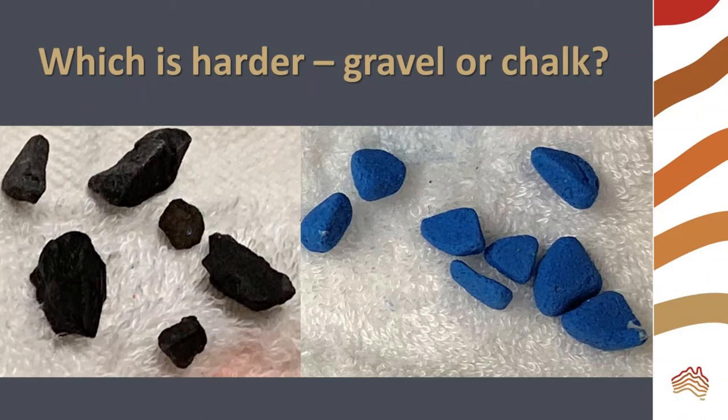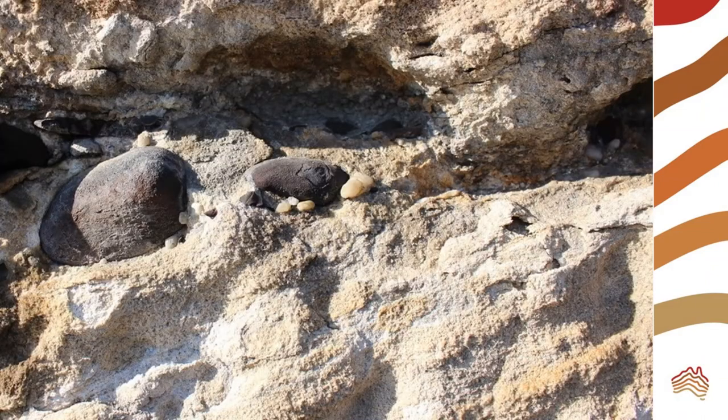We can see this in nature when we look at sandstone rocks. This sandstone has some larger pebbles in it — are they angular or rounded? When we look at sandstone, it can be hard to tell if the grains are rounded or not.